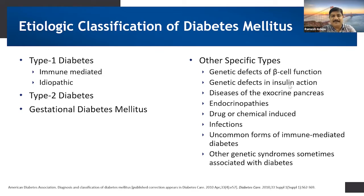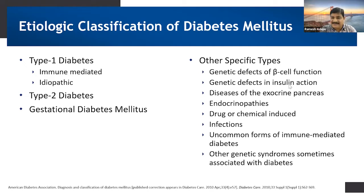The other specific types of diabetes mellitus include genetic defects of beta cell function or genetic defects in insulin action, diseases associated with the exocrine pancreas, endocrinopathies, chemicals or drugs, infectious diseases such as viral infections, uncommon forms of immune-mediated diabetes, and other genetic syndromes sometimes associated with diabetes.